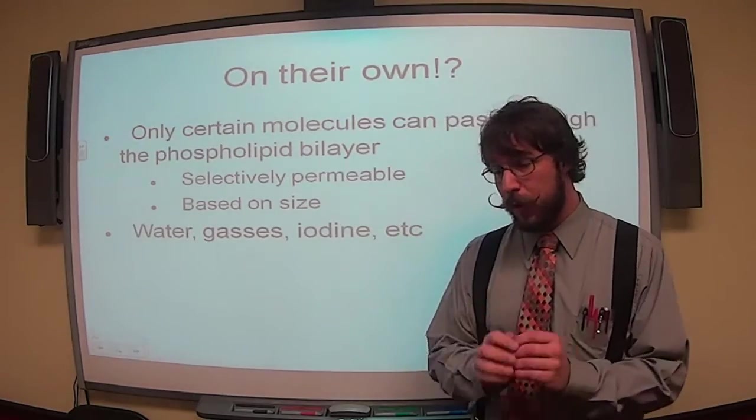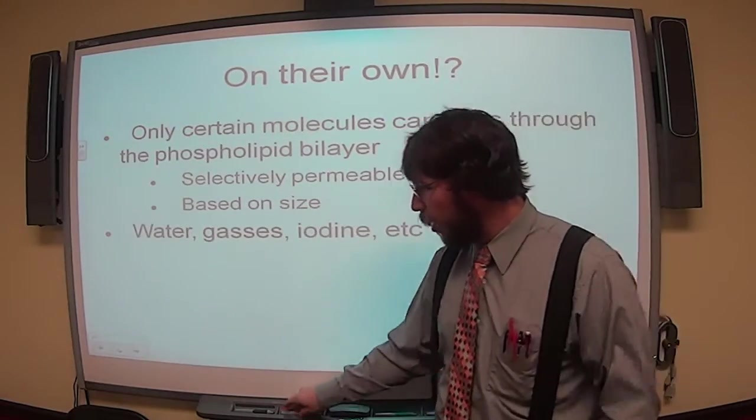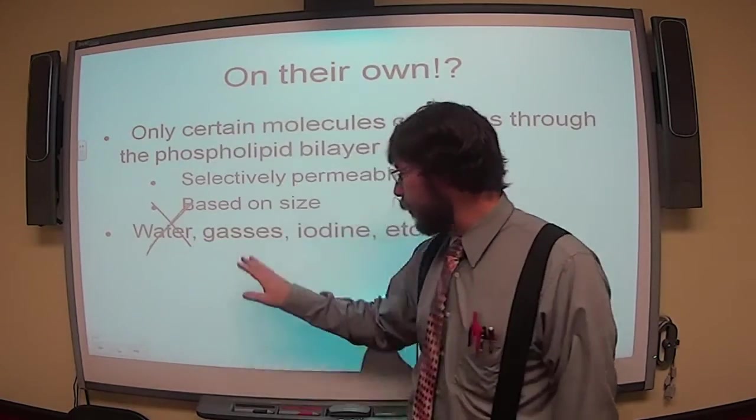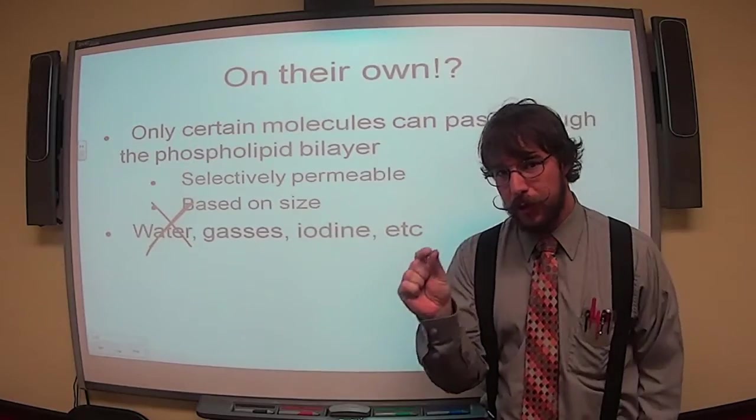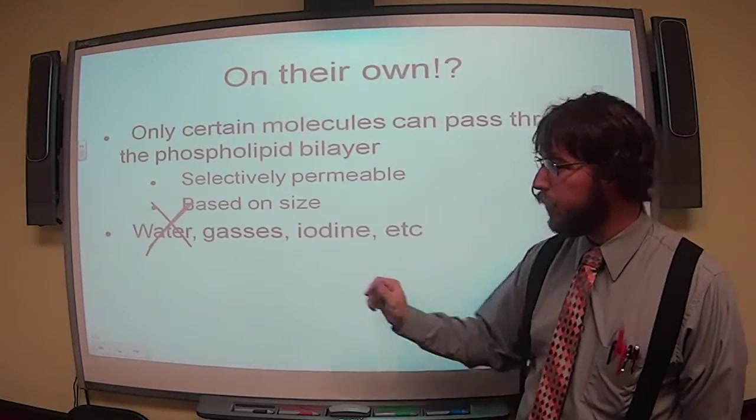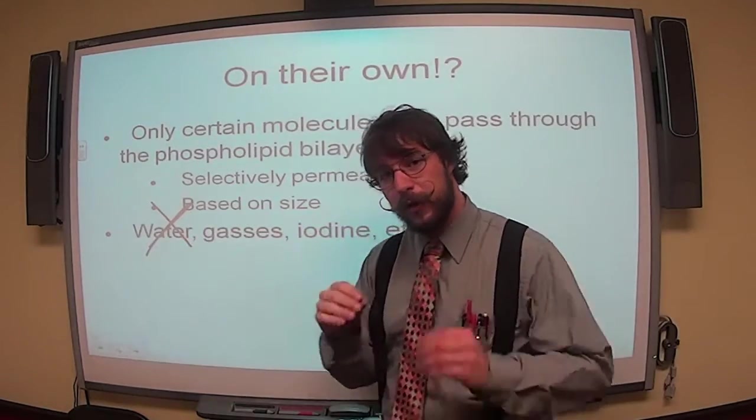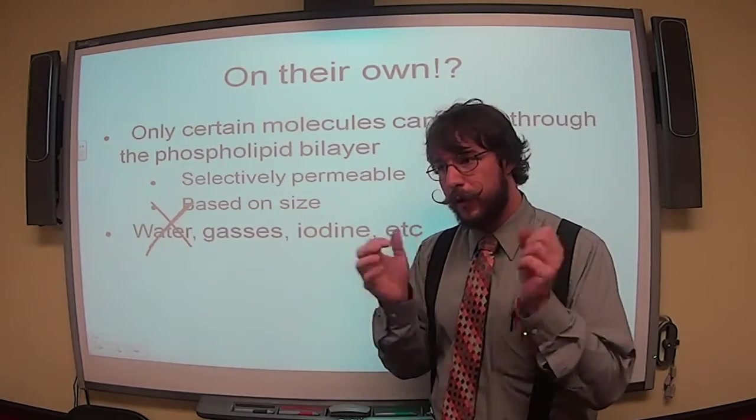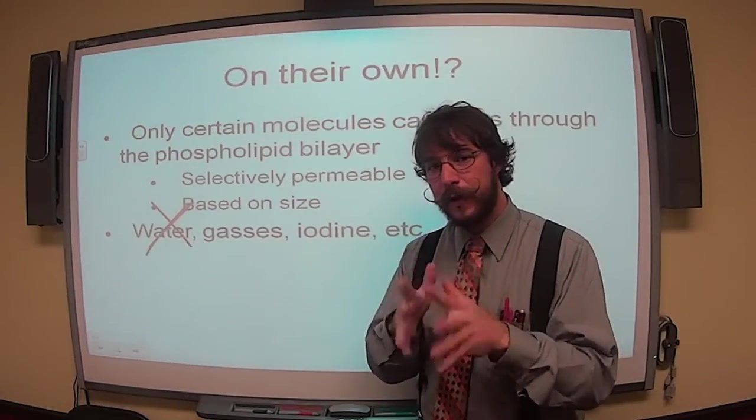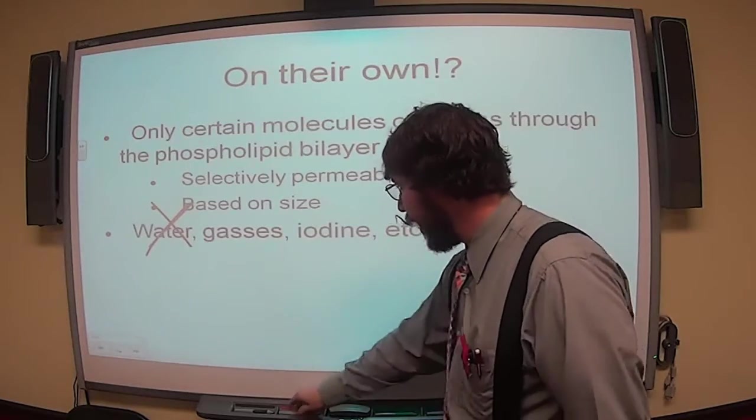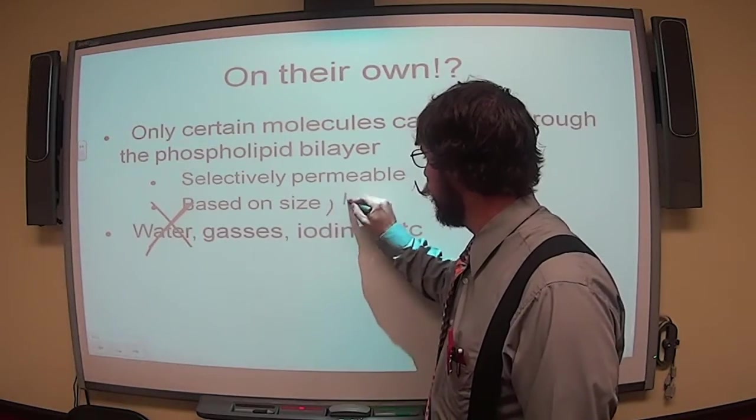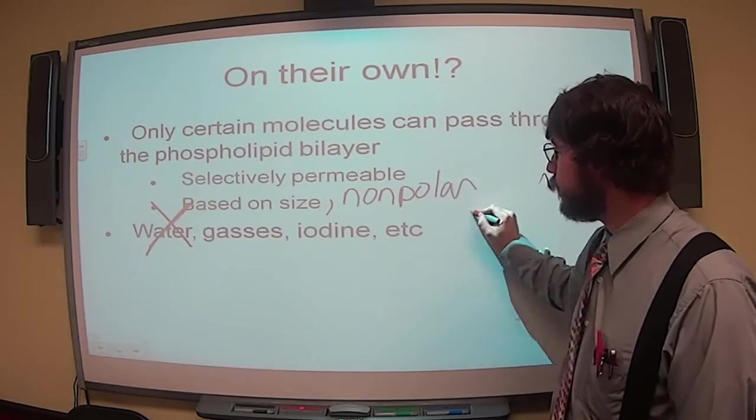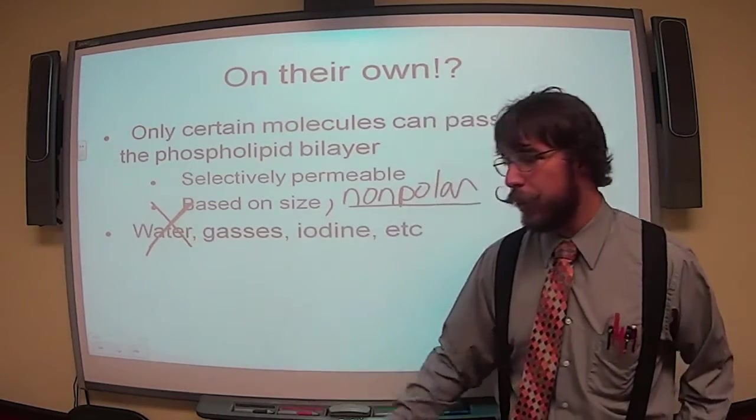Some examples of very small molecules that can move right through the membrane are actually not water. However, gases, iodine, little molecules like that are able to move through. The reason why water cannot move through, even though it is very small, is because water is polar and so it gets stopped. It's got to be small, and it also has to be non-polar. Only small non-polar molecules may move through.